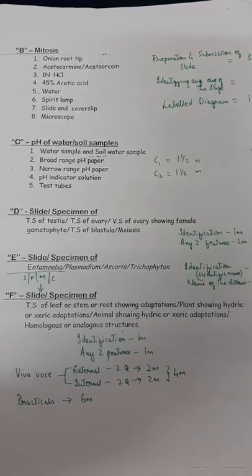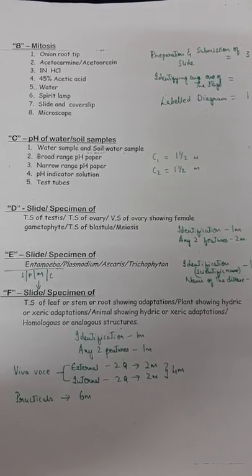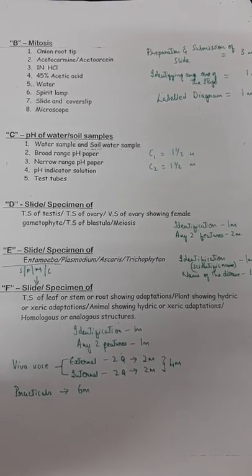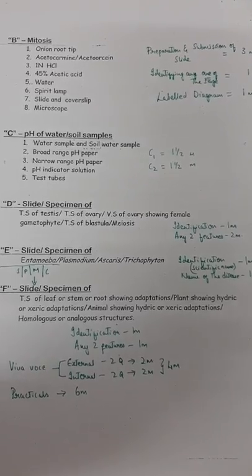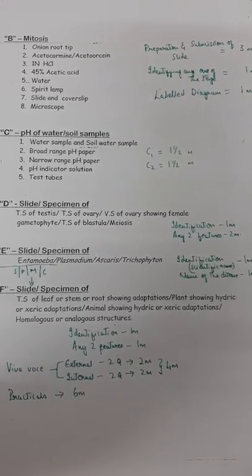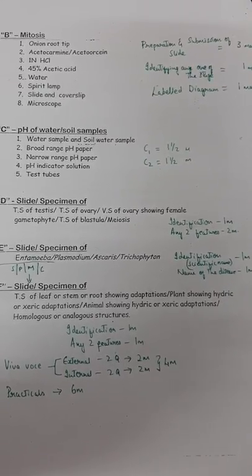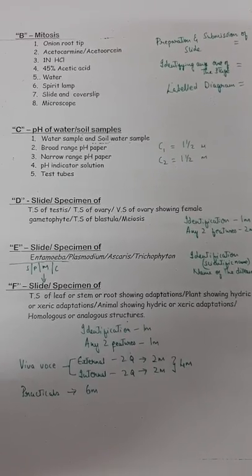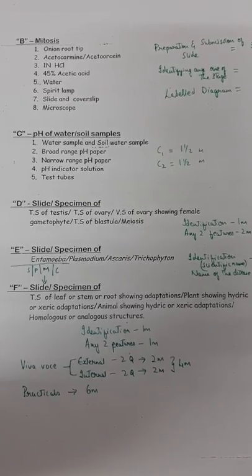Question C is pH of water or soil samples. You'll be given two samples and pH indicator papers. You need to find the pH of sample C1 and C2. Each sample identification fetches one and a half marks, so totally question C is worth three marks.